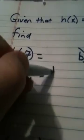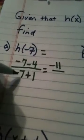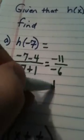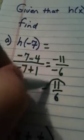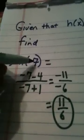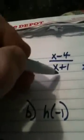This is just arithmetic. On top, I have negative 11. On the bottom, I have negative 6. Negative over a negative is a positive, so my answer is 11 over 6. So, part A is really not too exciting. It's simply plugging a number into both locations of the input.